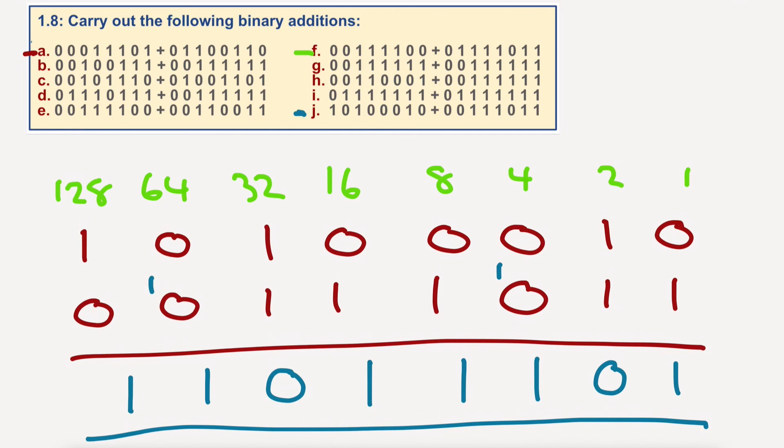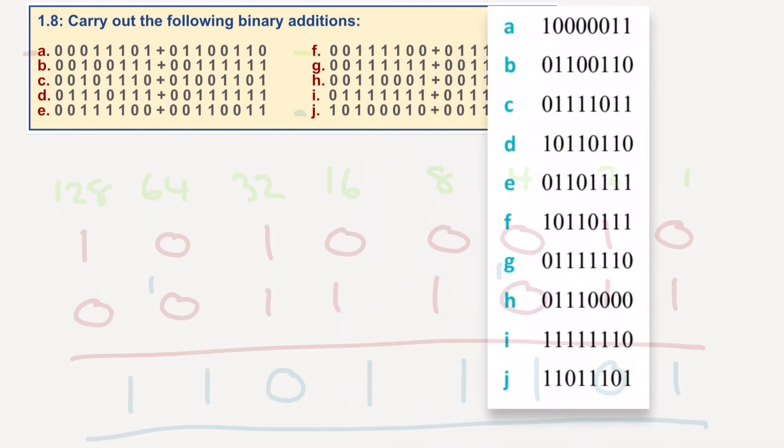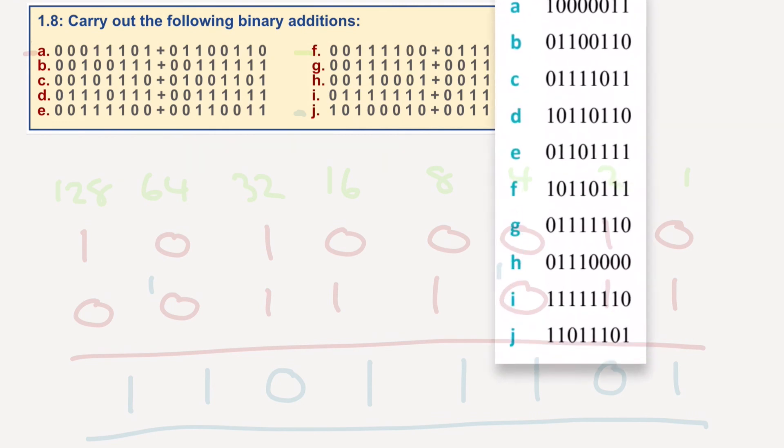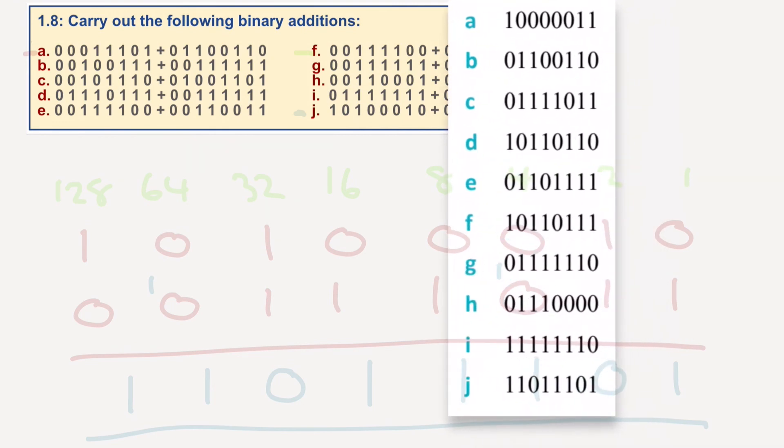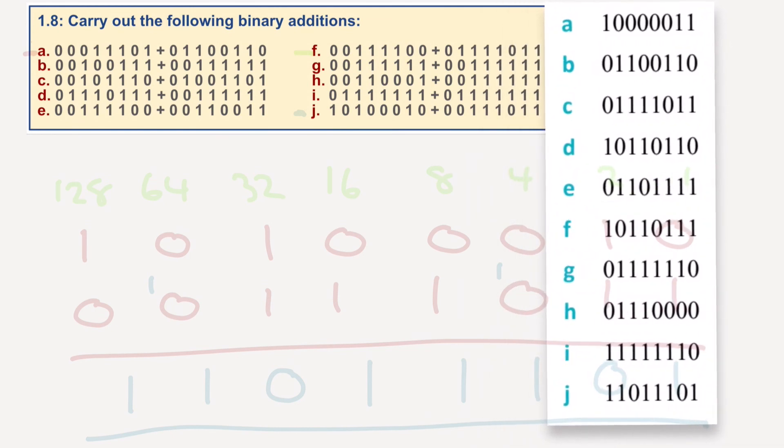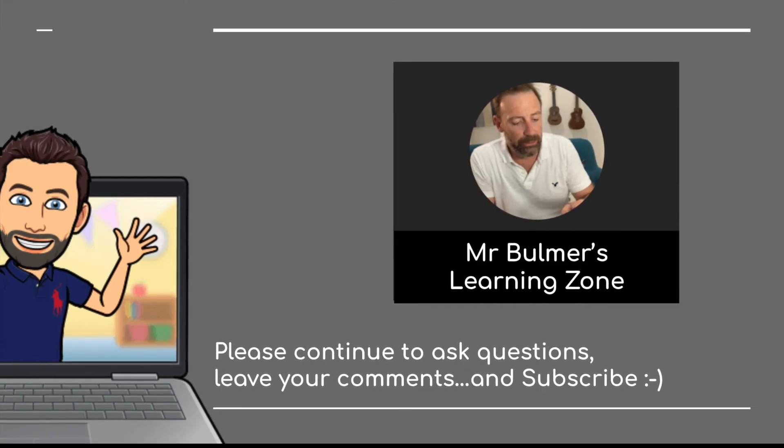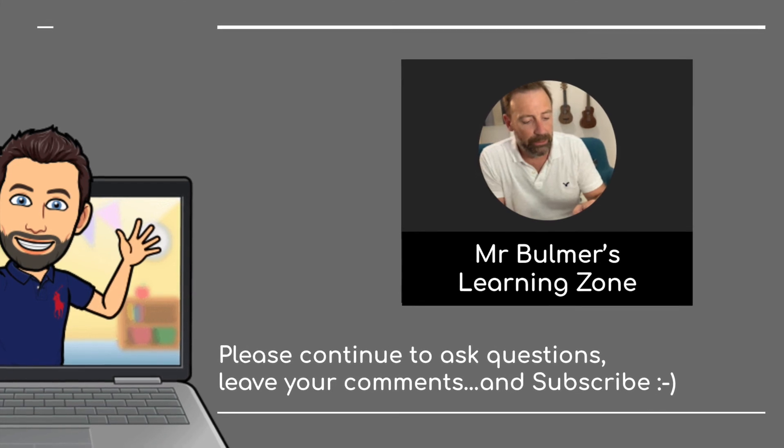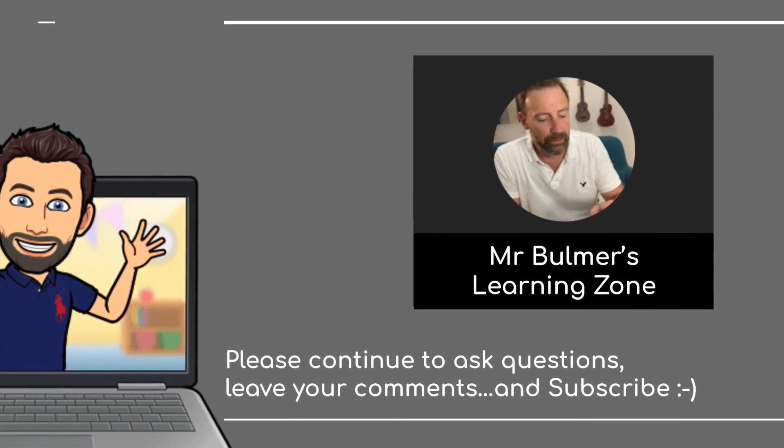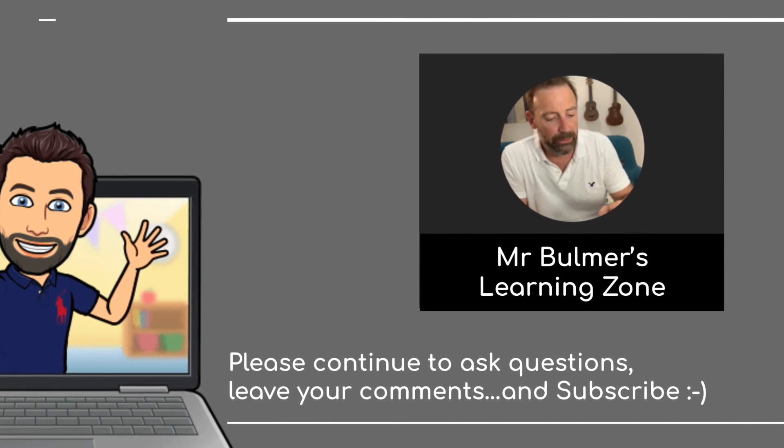Let us load the answers in and we'll see if we are correct. And as you can see, J, we've got 1, 1, 0, 1, 1, 1, 0, 1. And there are the rest of the answers. Okay. Pause the screen if you want to check the answers you've done. And there we go. That is it for 1.8. Thank you very much indeed. We're almost there. We're almost to the end of this chapter. Please subscribe and I will let you know as soon as another video is available.